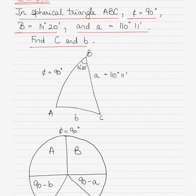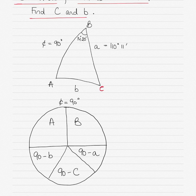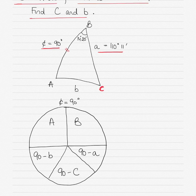Side A is 110 degrees 11 minutes and side C is 90 degrees, so this is the quadrant triangle. Angle B in this triangle is 14 degrees and 20 minutes. We will take this into a Napier's diagram and solve for angle C and side B — this one and this one here.